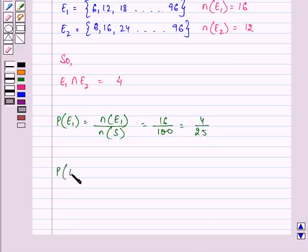Similarly, P(E2) is equal to n(E2) divided by n(S) that is 12 upon 100. That is further equal to 3 upon 25.